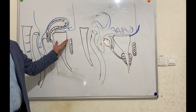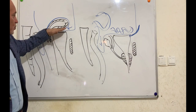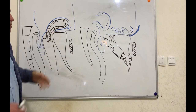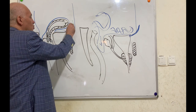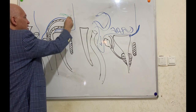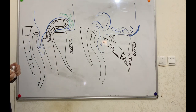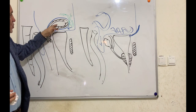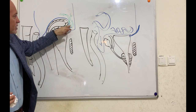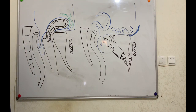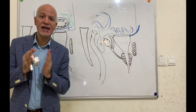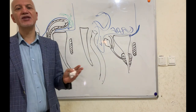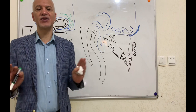Relations of the bladder in female: the superior surface is related to the uterus, the uterovesical pouch, and loops of small intestine. The inferolateral surface is the same as in male — related to the obturator internus, obturator nerve and vessels, and levator ani muscle.